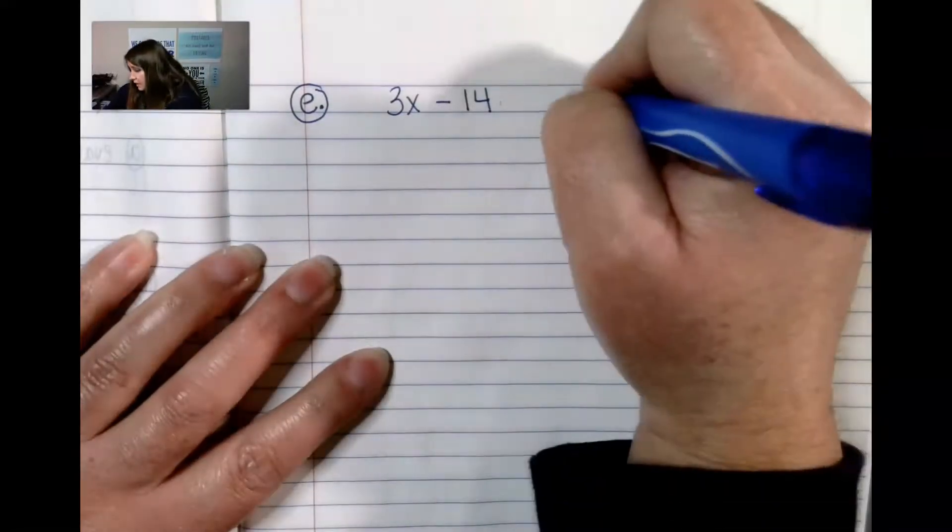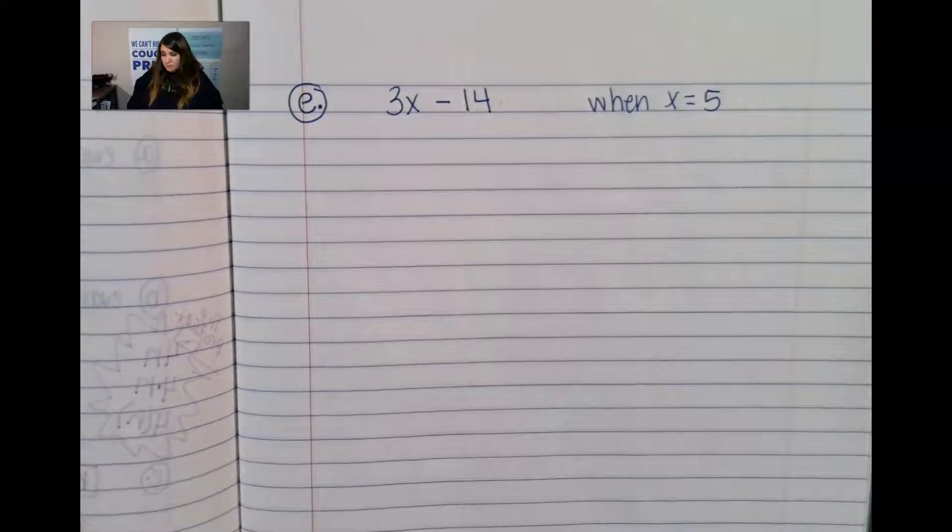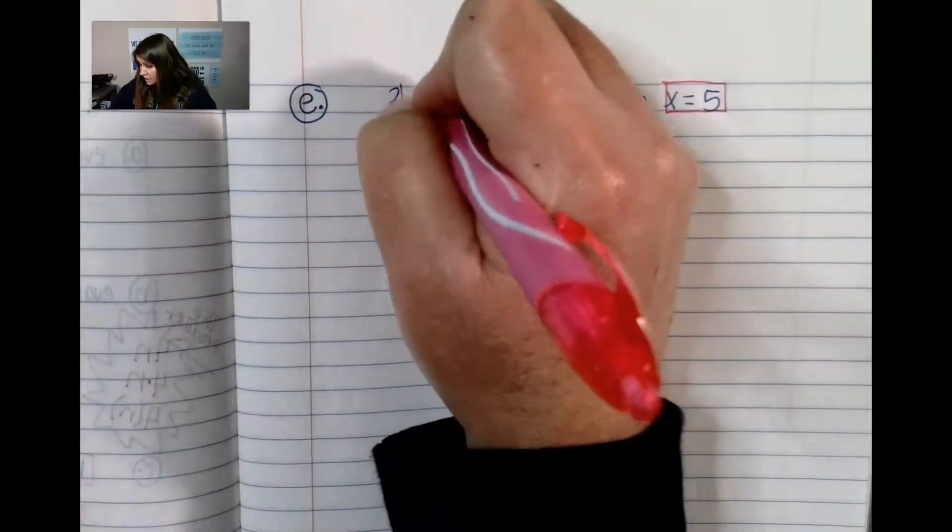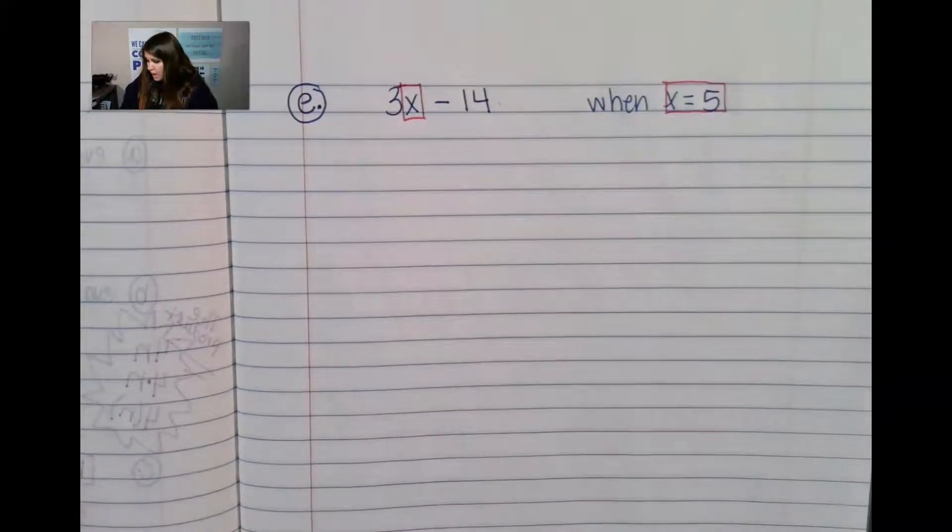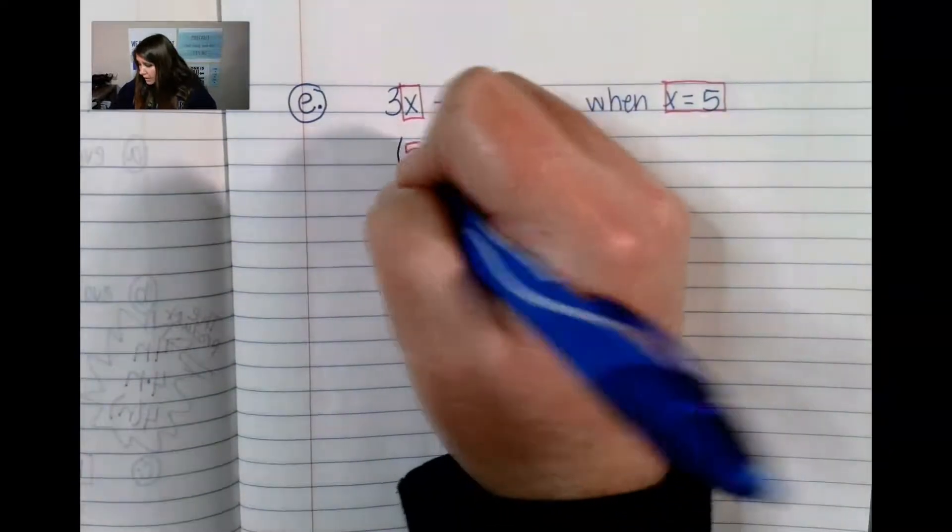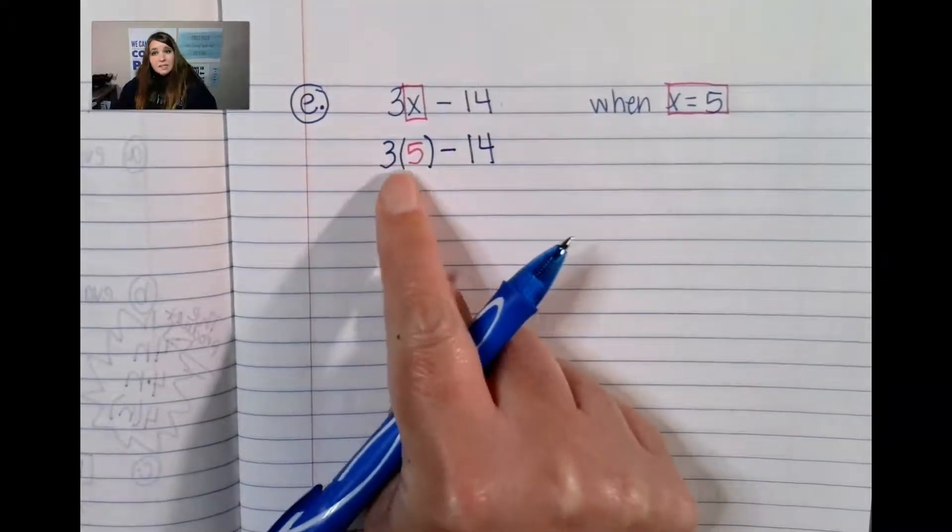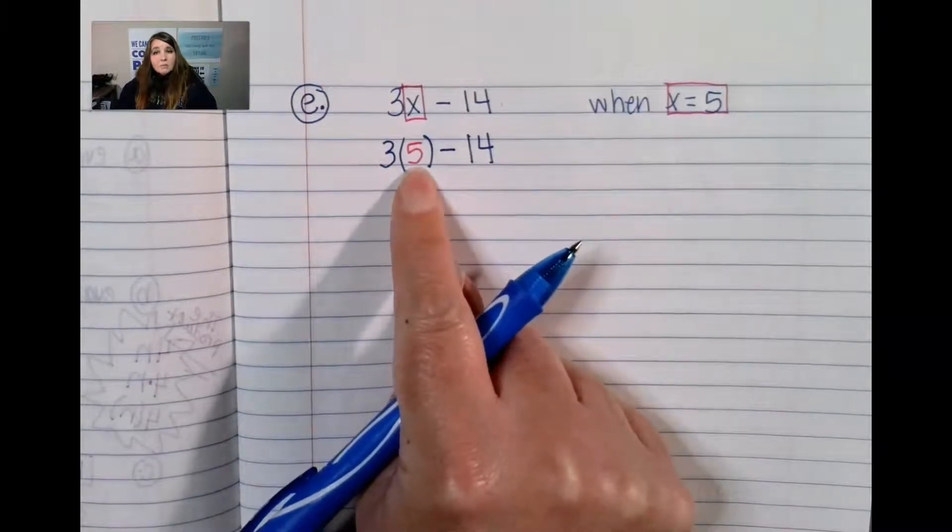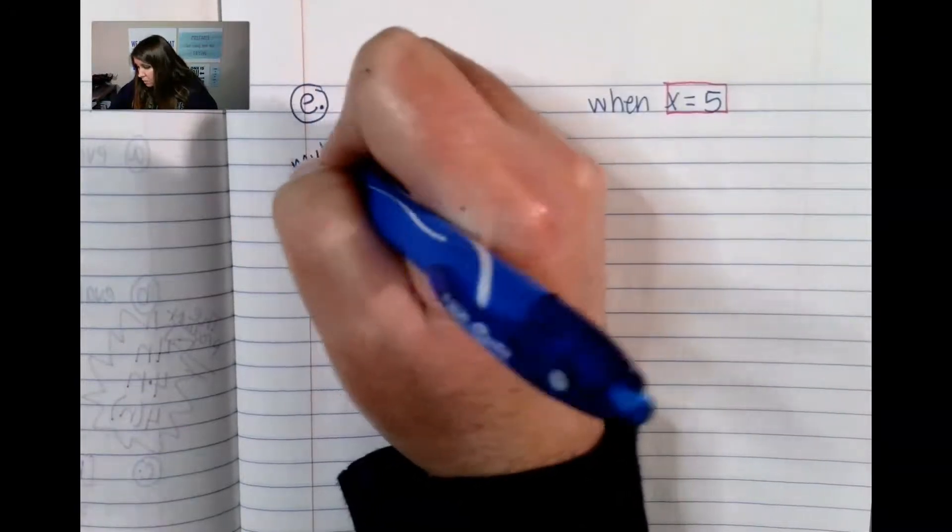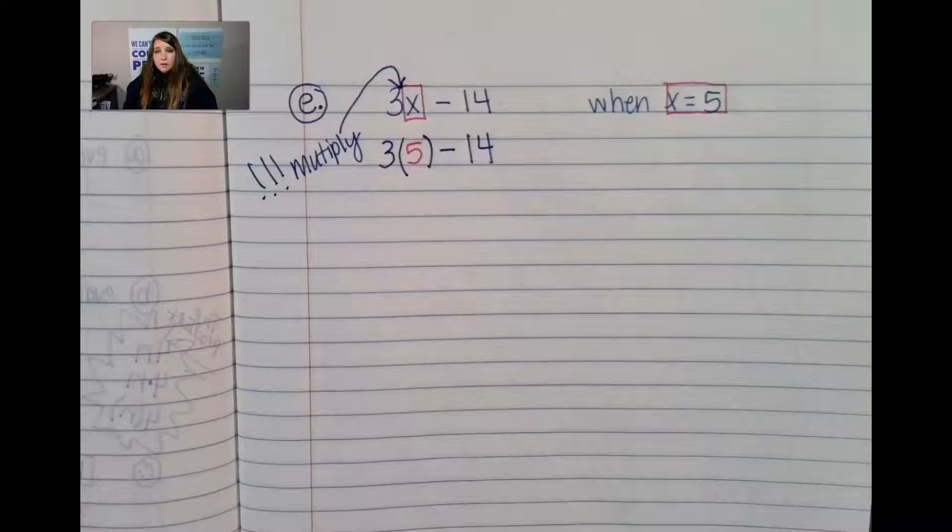So here's the plan. It says that x equals 5. So where I see this x, the x is going to tell the 3 what to do, right? Well, I know that when I have a number stuck to a letter, I am going to multiply. I am not just sticking the number right there. This is not 35. This is not just 3, 5. It is 3 times 5. You need to remember that this right here is multiply. Do not forget that.